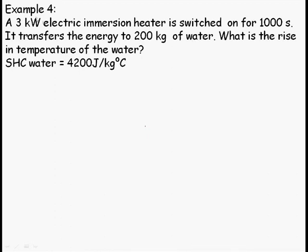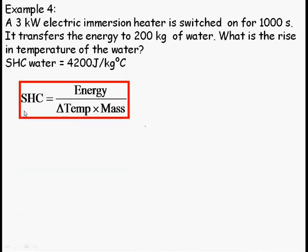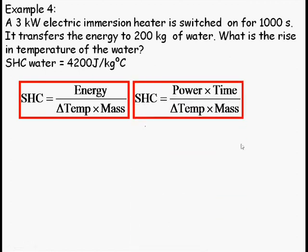3 kilowatts means 3,000 joules per second. 3,000 joules per second, and it's on for 1,000 seconds. I can easily work out the energy given. 3,000 times 1,000 gives me the number of joules supplied. So, let's just write down some formulas. This is the formula I know for specific heat capacity. The energy is going to be power times time, so I can rewrite it like this.